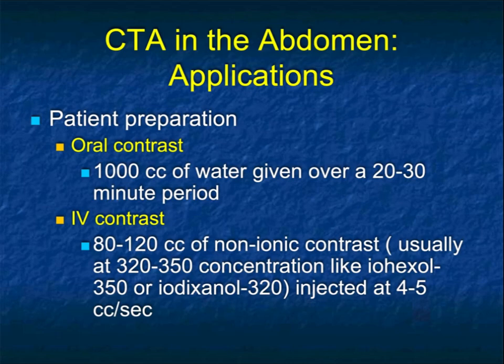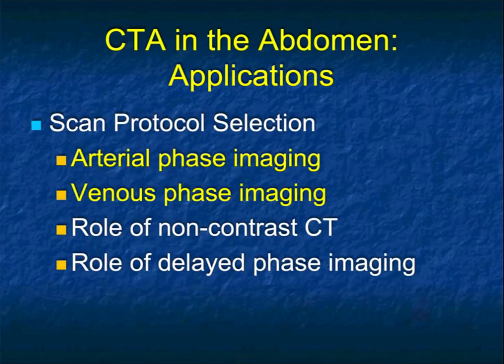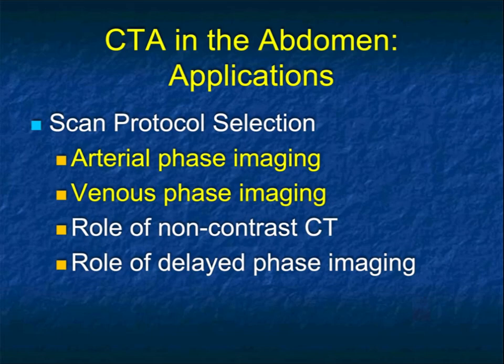IV contrast is critical — 100 to 120cc injected at 4 to 5cc per second becomes very important. Some tumors are vascular and will be easier to detect; think carcinoid. IV contrast also helps with differential diagnosis, as a mass's enhancement pattern will often allow you to be very specific — whether it's an adenocarcinoma, lymphoma (which is homogeneous but doesn't enhance), carcinoids (very vascular), or GISTs (which can also be very vascular, particularly when small). There is no role for non-contrast scans, and delayed phase imaging after arterial and venous phases is not necessary.